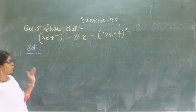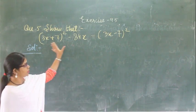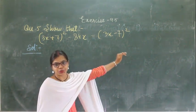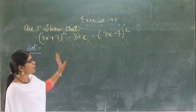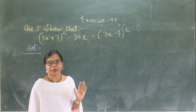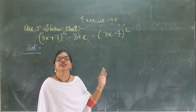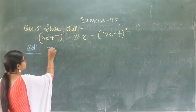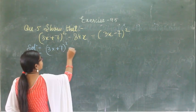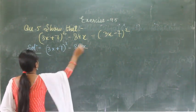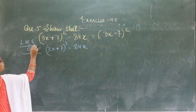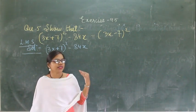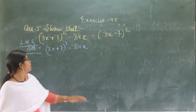This is question number 5. You have to show that the left hand side equals the right hand side. First I am going to solve the LHS, then I will solve the RHS and check whether LHS equals RHS. So from here I am getting: (3x plus 7) whole square minus 84x on the left hand side. And on the right hand side: (3x minus 7) whole square.